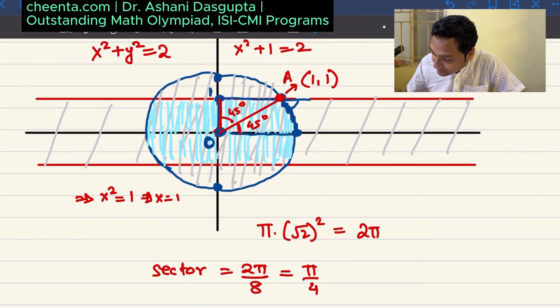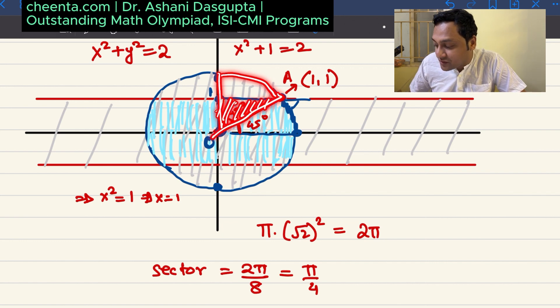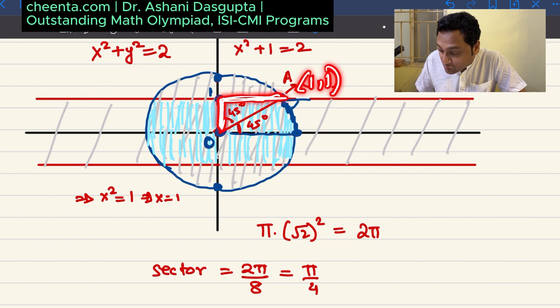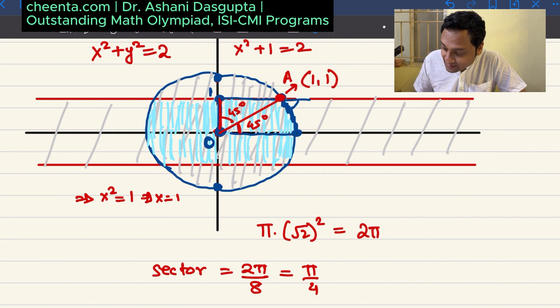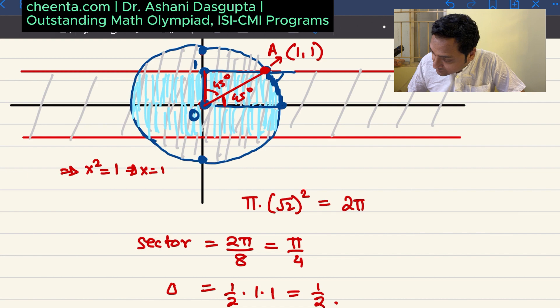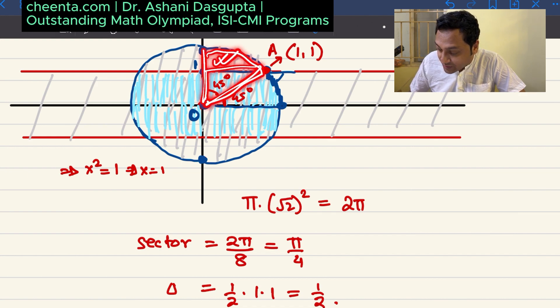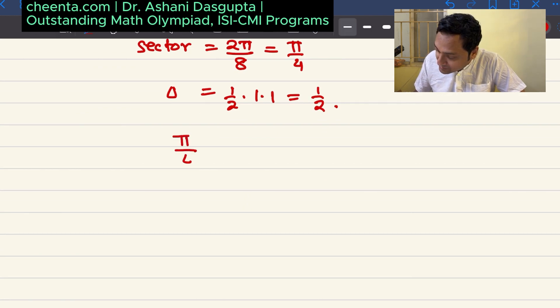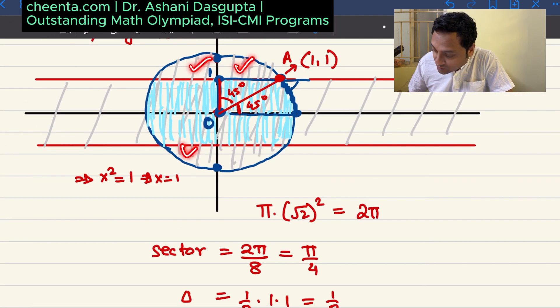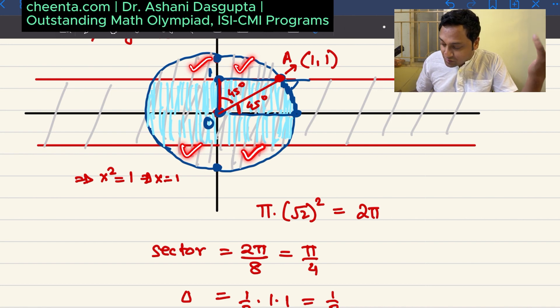Now from the sector's area, this entire sector's area, you can remove this area of the triangle. Then you'll get this particular region. So what is the area of the triangle? Well, its height is 1 and the base is also 1 because this is 1, 1. Though it doesn't look like that, but mathematically, you can easily see this is 1, this is 1. So the area of the triangle is half times 1 times 1, which is half. So from the sector, if you remove the triangle, you will get the white region. So pi by 4 minus half is the white region in one quadrant. Now you have four white regions, 1, 2, 3, 4, and all of them must be the same by symmetry. So let's compute the total white region.